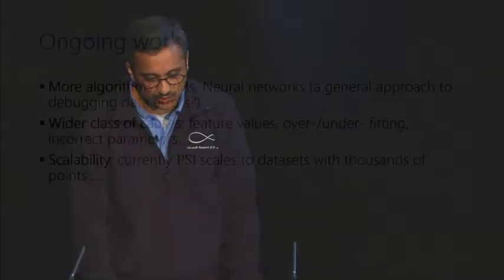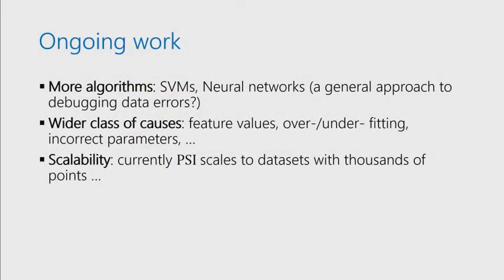In terms of ongoing work, we're looking at more implementations like SVMs, neural networks. One disadvantage with this approach is that with every new algorithm or implementation of an algorithm, we are required to look at the code and write the models ourselves. It would be interesting to come up with a more general approach to automatically coming up with these models. We've barely scratched the surface as far as debugging is concerned. There's a wider class of root causes to be explored, like feature values, incorrect feature values, underfitting of data, incorrect parameters, and so on. We hope to look at these issues as well. Currently, our tool scales to data sets with thousands of points, and we need to do more work to get our tool to work over larger data sets. So with that, I'll stop. Thank you.